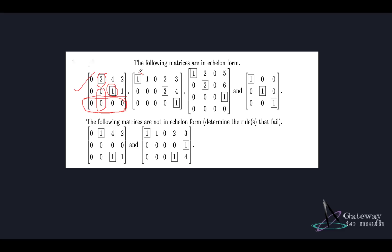Let's take the second example. The pivot entry is 1, the next pivot entry is 3, and then the next pivot entry is 1 — they're all on the right. All the entries below the pivot in a pivotal column are zero. So this matrix is also in row echelon form. The third example has pivots 1, 2, 1 — all on the right-hand side — and entries below the pivot in pivotal columns are zero. This is also in row echelon form. The fourth example similarly satisfies all conditions and is also in row echelon form.